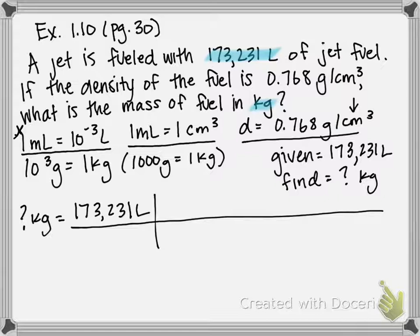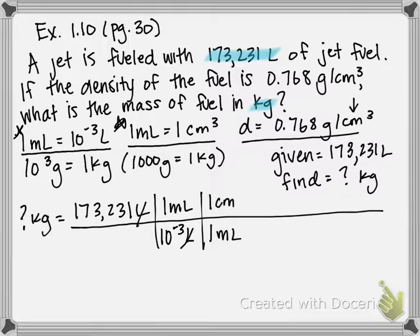Remember, what you want to cancel goes on the bottom, 10 to the negative third liter, what you're trying to get to goes on top, which is one milliliter. So liters are going to cancel here. And now, now that we're in units of milliliters, we can use this second conversion, one milliliter is equal to one centimeter cubed to get from milliliters to centimeters cubed. So one milliliter is equal to one centimeter cubed. That's going to cancel the milliliter unit.